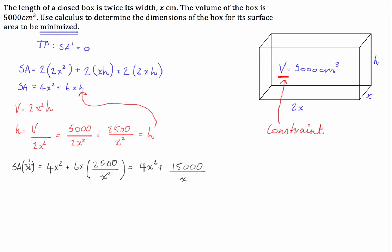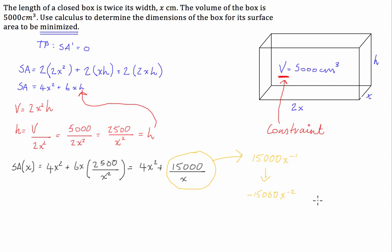Now we have our objective function in terms of one variable. We can differentiate it to find the turning point. For the second term, rather than writing divided by x, write it as 15,000 times x to the negative 1. When you differentiate, you bring the negative 1 down, giving negative 15,000, then reduce the power by 1 to get x to the negative 2. So the derivative of the second part becomes negative 15,000 over x squared.